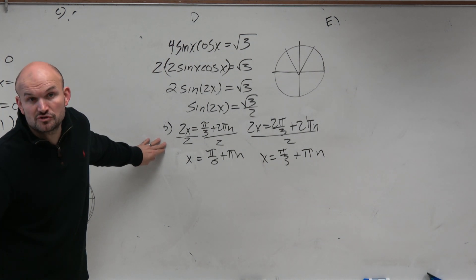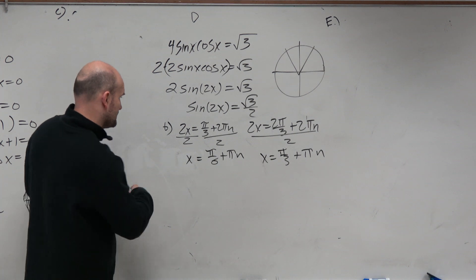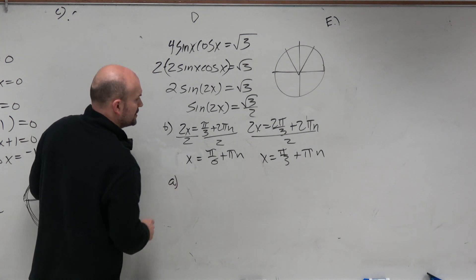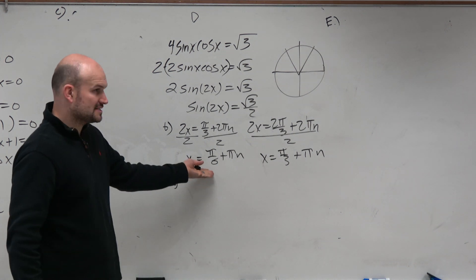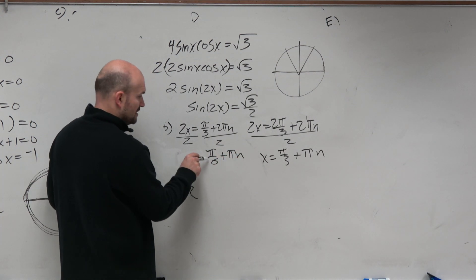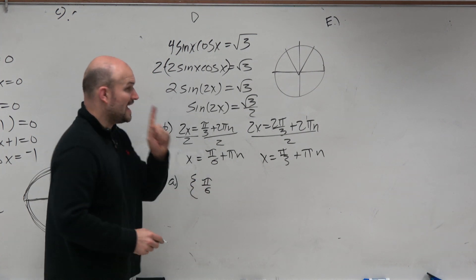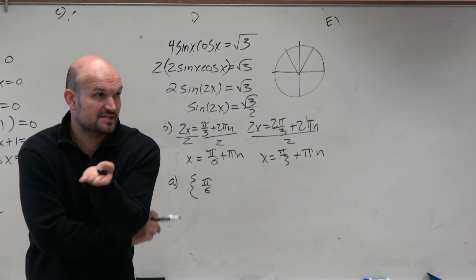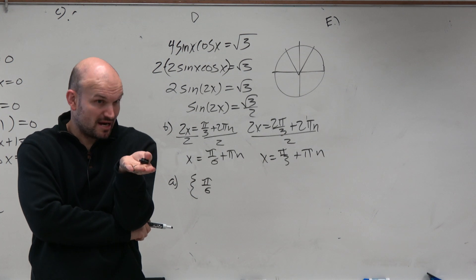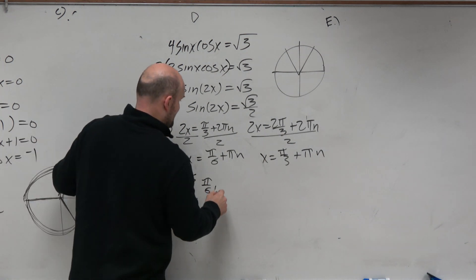If I just wanted to find the solutions between 0 and 2π, then all I'm simply going to do is just take my solutions and add different intervals of n. So let's play that game. So here, π over 6, n is 0, so my answer is π over 6. When n is 1, that's π over 6 plus π. Pi is 6π over 6, so 6π over 6 plus π over 6 is 7π over 6.